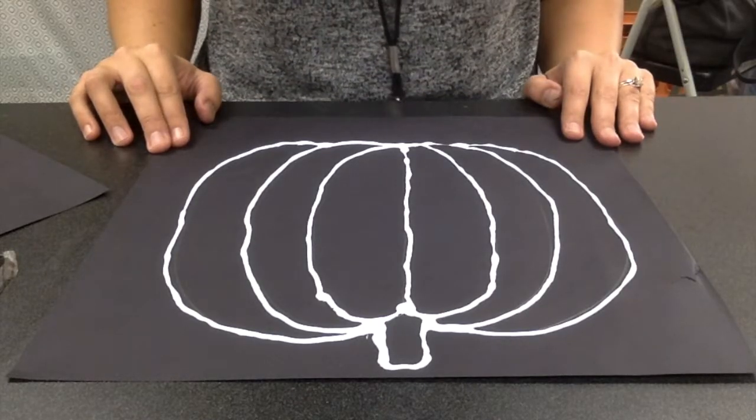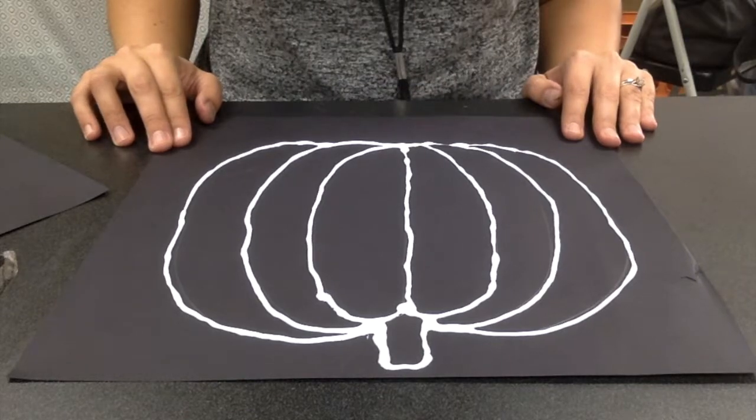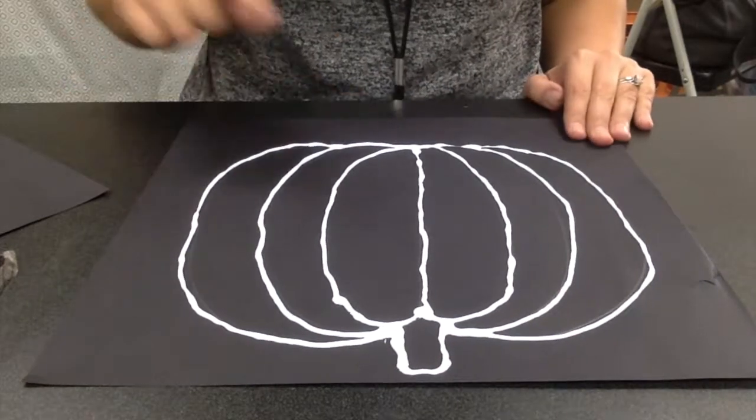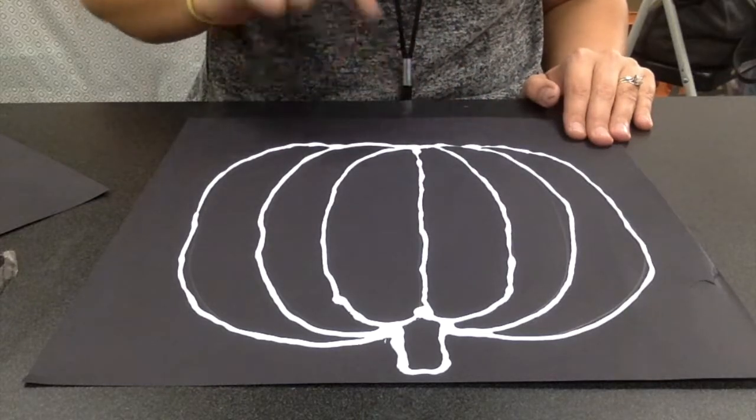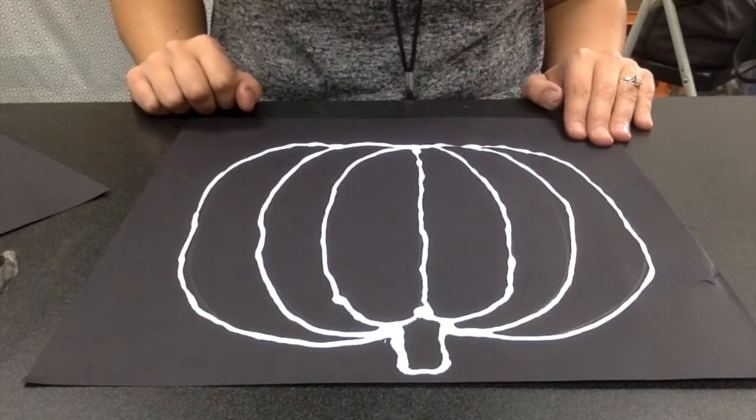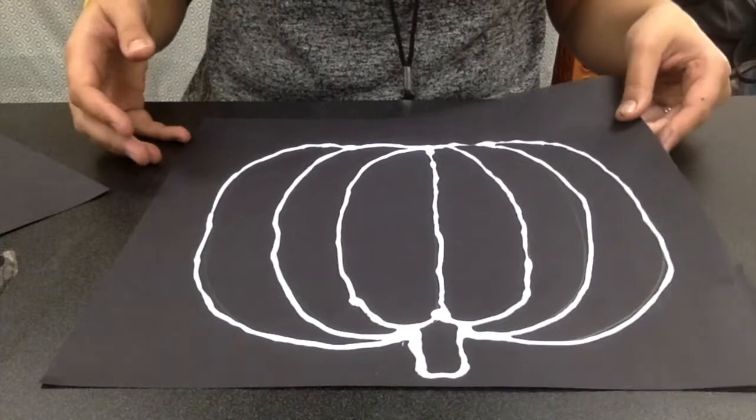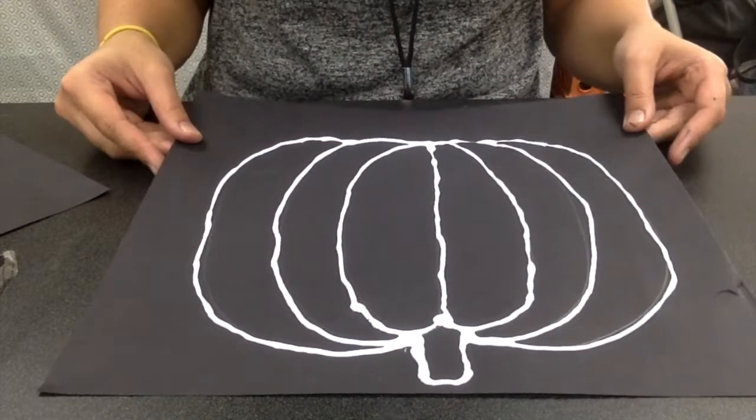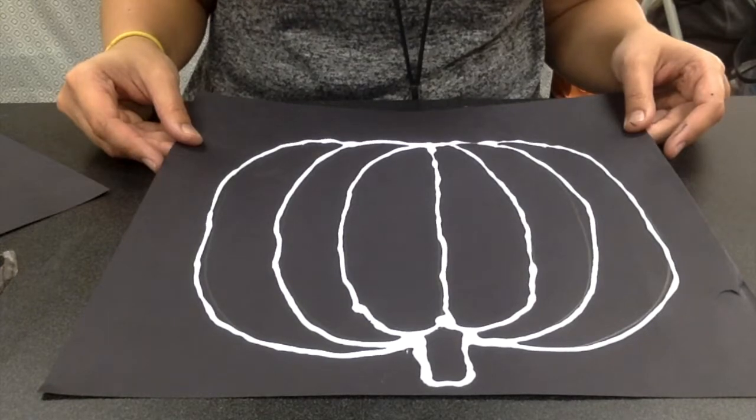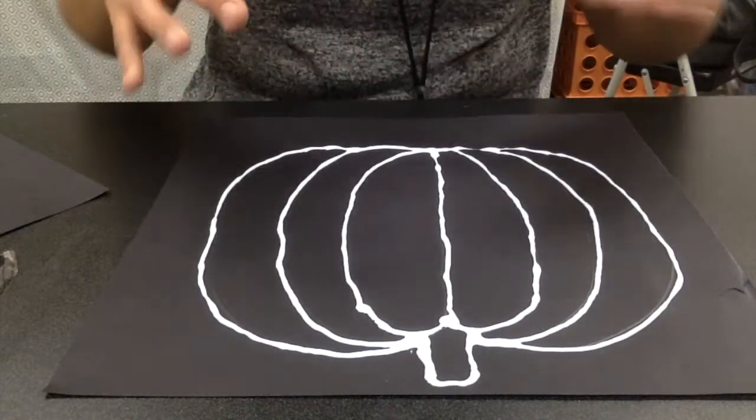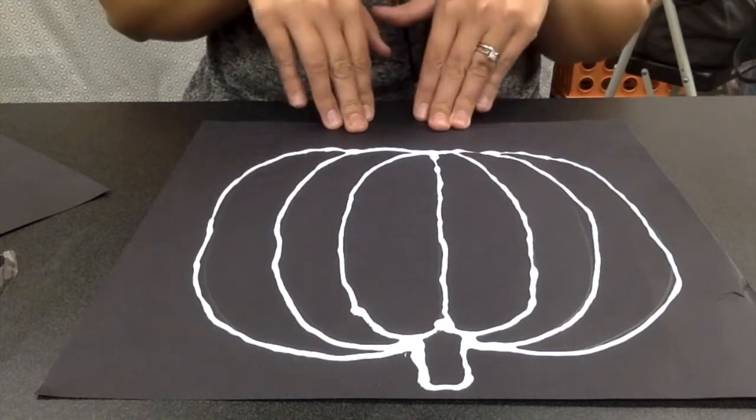Okay, I'm all finished tracing my pencil lines with glue. Now as you can see, these glue lines are not dripping all over the place because I did not use too much glue. I can't pick this up and turn it around and show you because my glue is wet and it will drip all over the place.